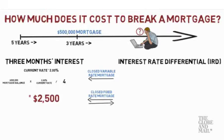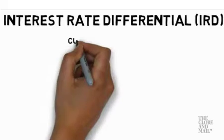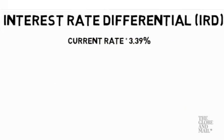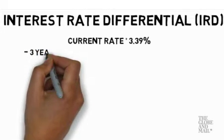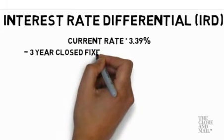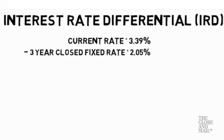Let's see how to estimate the interest rate differential amount. First, start with your current interest rate, which may be 3.39%. Now you have to find the interest rate available for a mortgage term from now until your term is up. Since there are three years left in your five-year term, that means you have to look up the current rate for a three-year closed fixed rate mortgage. Right now, that might be 2.05%.